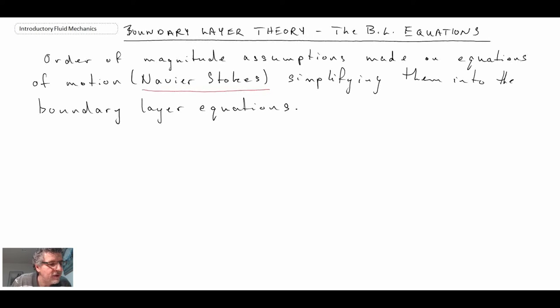We use this order of magnitude approach where we look at large terms, small terms, and neglect the smaller terms. In the analysis, we're going to make a couple of assumptions: we're going to neglect gravity, so the body forces will be neglected, and we're going to assume that we're looking at two-dimensional flow and incompressible as well.